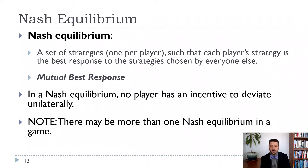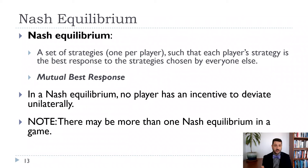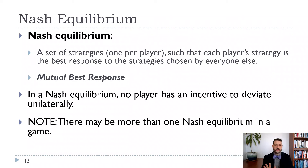Why isn't not-confess, not-confess the Nash equilibrium? Because neither of us has an incentive to deviate by ourselves. If I switch from confessing and the other person doesn't, I end up worse — 20 years in jail versus nothing for them. That's really the key of the Nash equilibrium: it is a mutual best response. And as we saw in the coordination game, there may be more than one Nash equilibrium in a game.